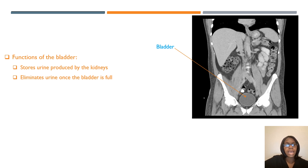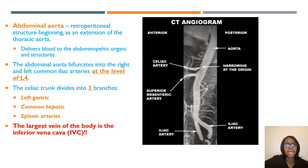For each organ of the abdomen, it's good to know the functions. You can see I have an arrow pointing to the bladder — it stores urine and eliminates urine once full. Make sure you know your CTA, know your arteries, know where they branch off, and know how to identify and label them on the CT image. This information is important not only for test purposes but also as a technologist, because patients trust us to give good images.